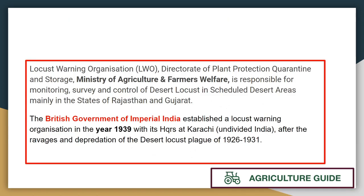The Locust Warning Organization functions under the Directorate of Plant Protection, Quarantine and Storage. The British government established a locust warning organization in 1939, which was headquartered in Karachi, Pakistan, due to the desert locust plague of 1926–1931.